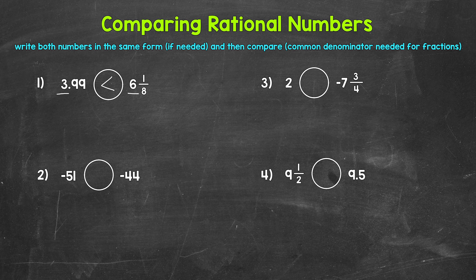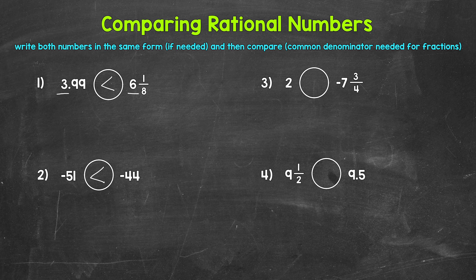For number two, we have negative 51 versus negative 44. We are working with two negatives here, and we need to be careful. Although 51 is greater than 44 when they are positive, that's not the case for negatives. Negative 44 is greater than negative 51. Think about a number line — negative 44 is further right, closer to zero. So reading the comparison from left to right, negative 51 is less than negative 44.